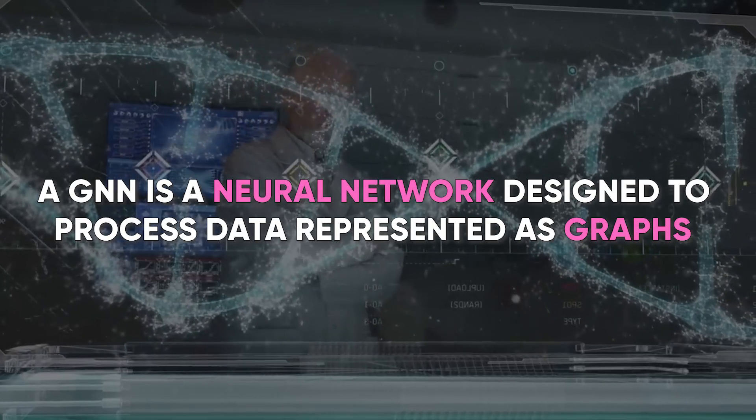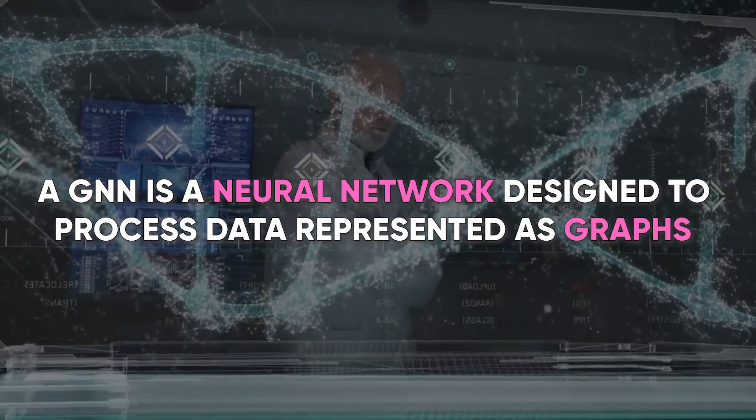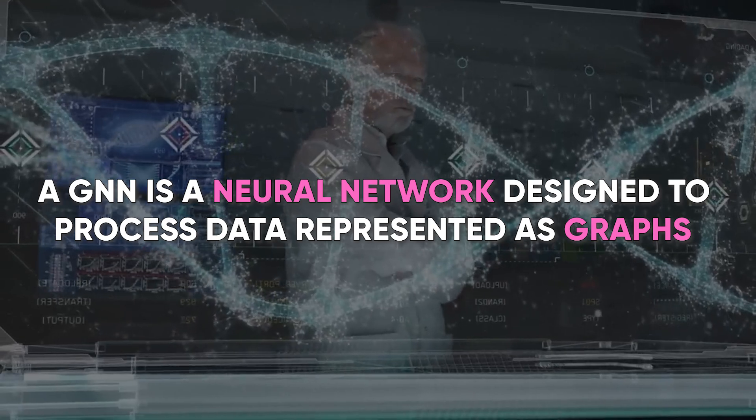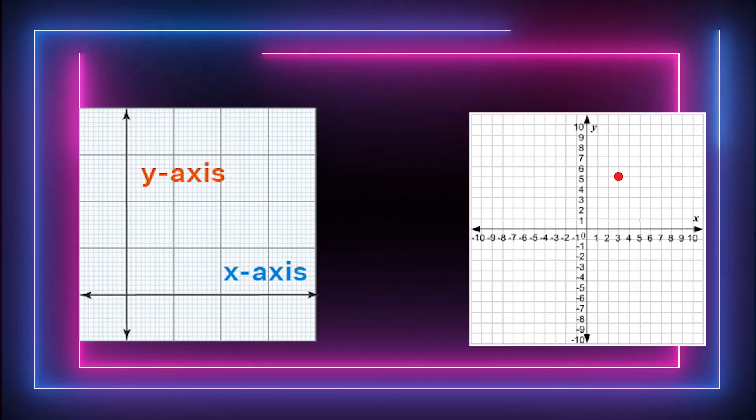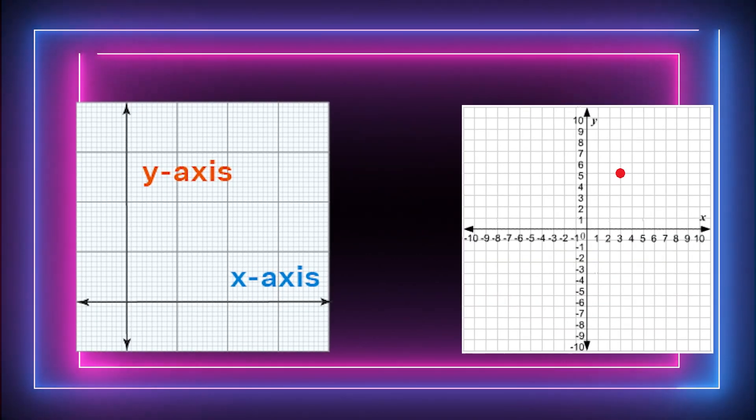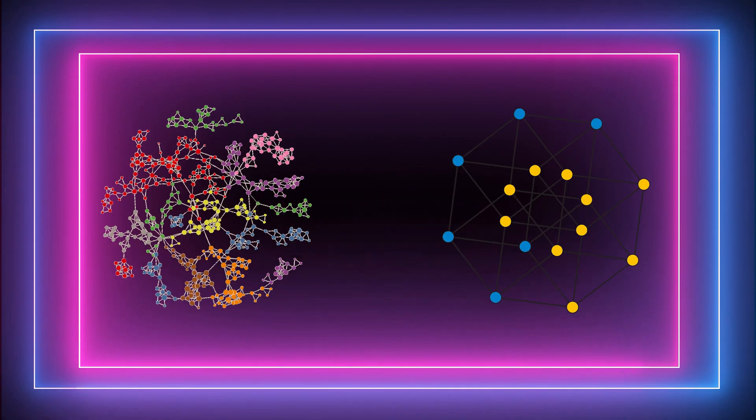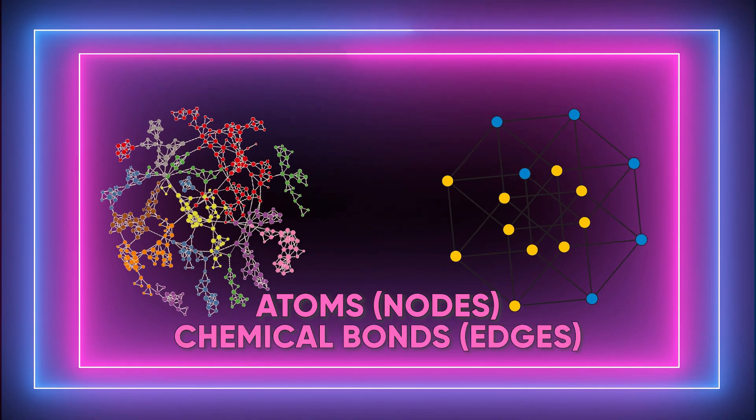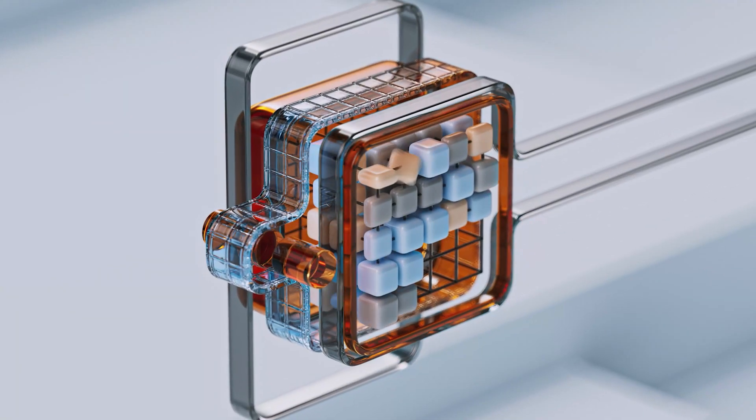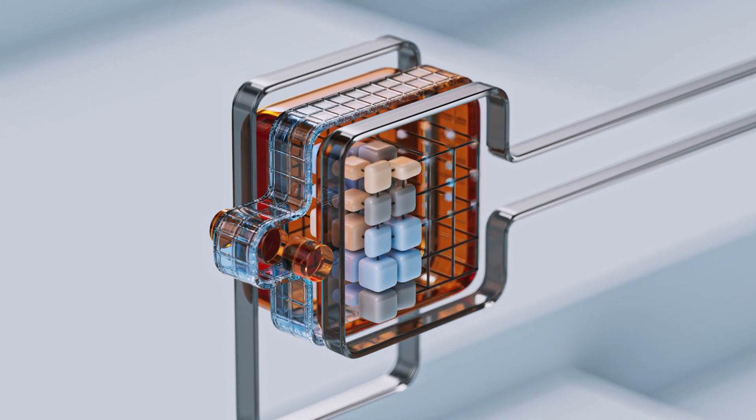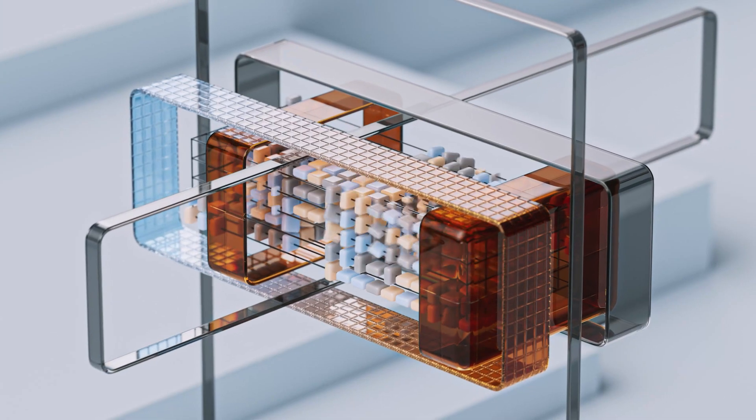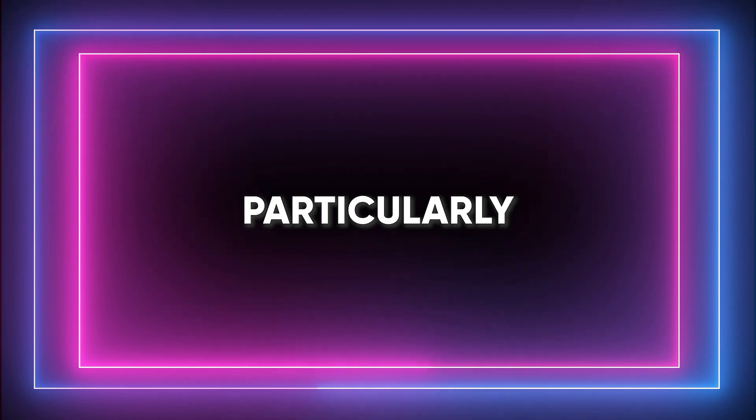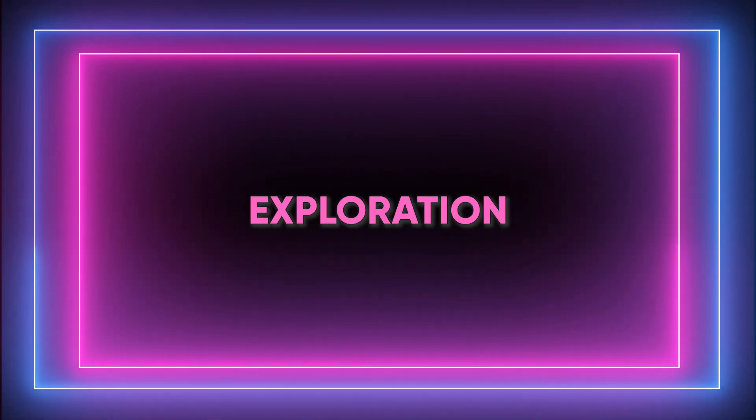A GNN is a neural network designed to process data represented as graphs. In material science, these graphs are not the typical X and Y axes we remember from school, but rather intricate maps of atoms, nodes, and their chemical bonds, edges. This ability to understand and analyze relationships between atoms sets GNNs apart from other AI models and makes them particularly well-suited for material exploration.